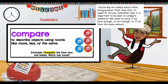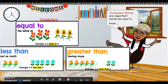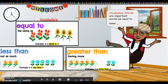And remember, we compared the M&Ms — we tried to figure out which one had more, and we said the red. Alright, so this is the vocabulary that we're going to use.